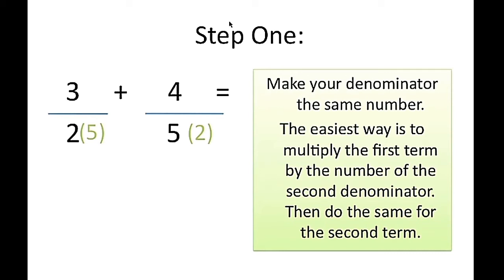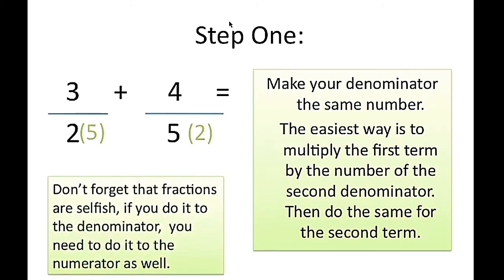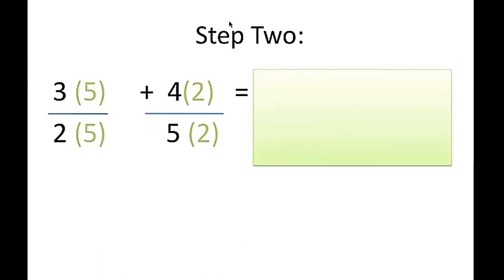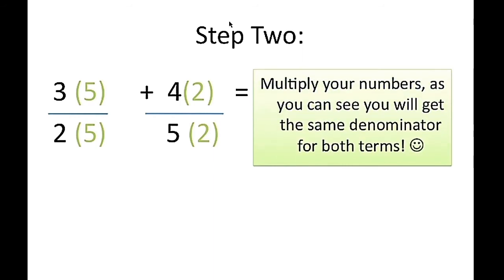Here are two different denominators. Denominator is 2, denominator is 5. So we have to multiply. Don't forget that fractions are selfish. If you do it to the denominator, you have to do it to the numerator. So 3 multiply 5 is 15. And denominator 2 times 5 is 10. 4 times 2 is 8. And 5 times 2 is 10.